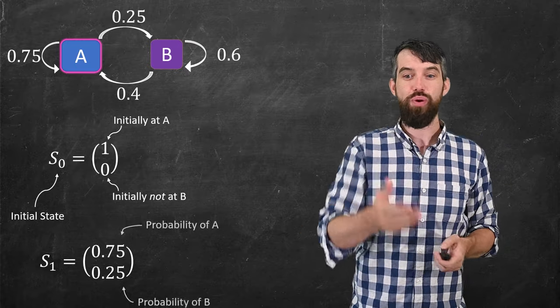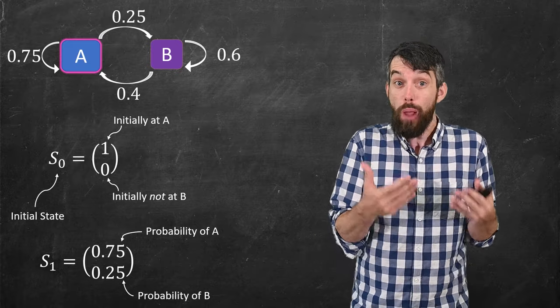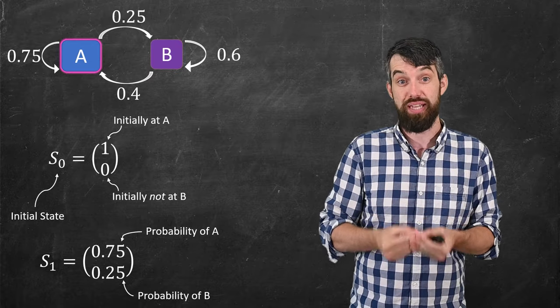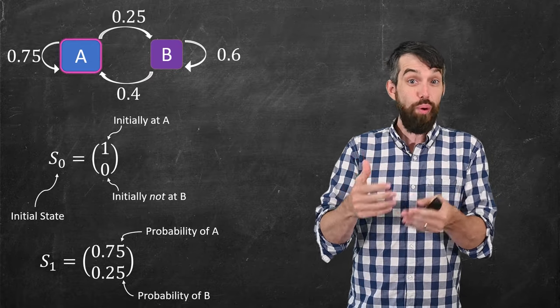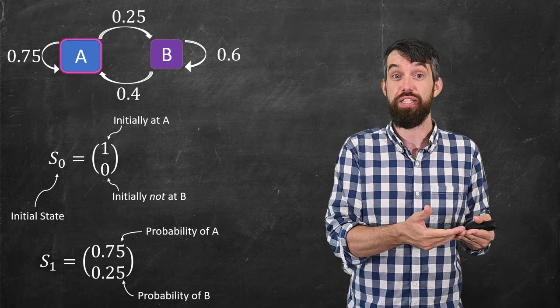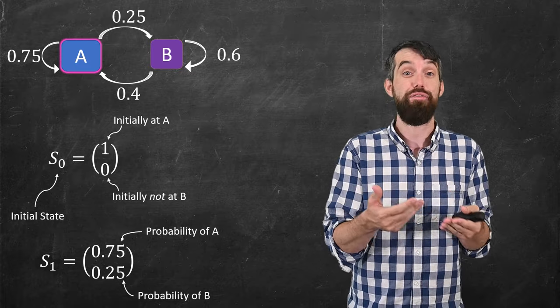And likewise, the 0.75 and the 0.25, the top number is still referred to as the state A, and the second number is referred to as the state B. And so the 0.75 in the S1 is referring to the fact that there's a 75% chance of it being back in state A after one iteration.